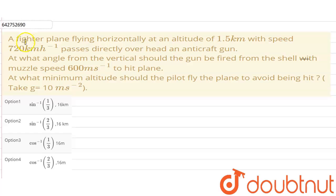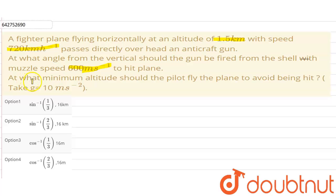Our question is: a fighter plane flying horizontally at an altitude of 1.5 km with a speed of 720 km per hour is passing directly overhead an aircraft gun. At what angle from the vertical would the gun be fired with a muzzle speed of 600 meters per second to hit the plane? At what minimum altitude should the pilot fly to avoid being hit? Take g equal to 10 meters per second squared.